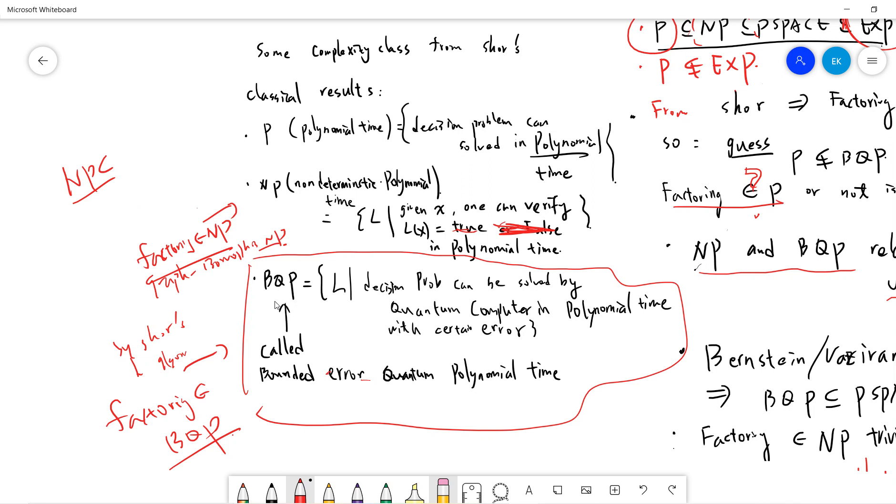Then there's a thing called BQP. BQP basically is defined to be the quantum computer analog of polynomial time. This is the collection of decision problems that can be solved by a quantum computer in polynomial time with certain error. This is called bounded error quantum polynomial time.